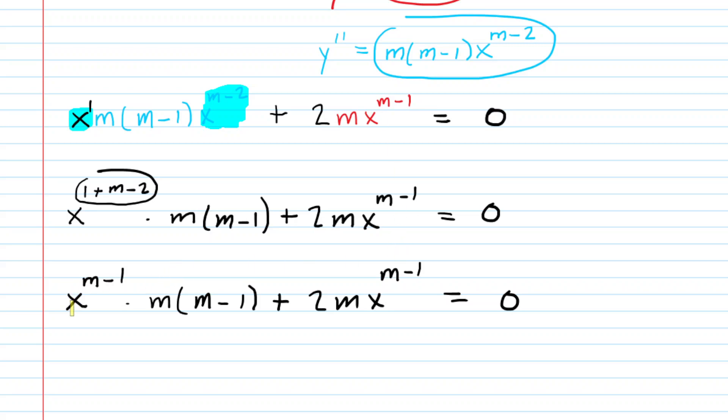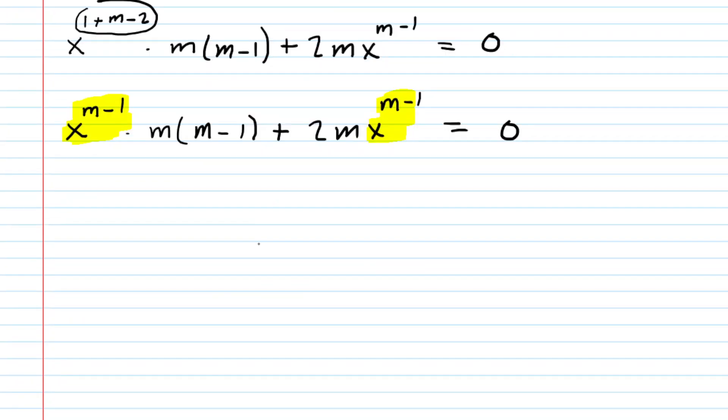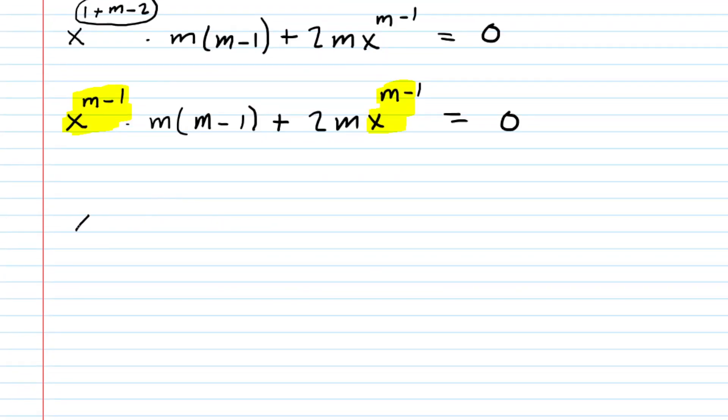This is interesting because if you look carefully, you have a common factor within each group of terms. You have x to the m minus one in the first and second terms. Because it's a common factor, we can factor it out. So we factor out x to the power of m minus one, and this gets multiplied by m times m minus one plus two times m.